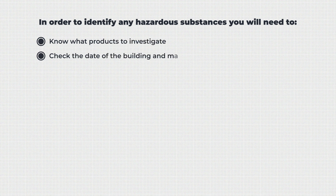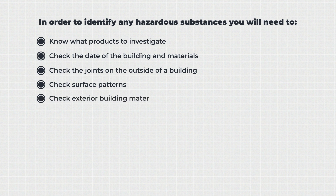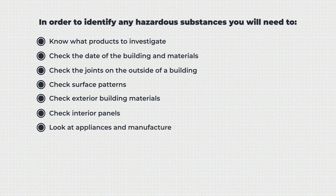Check the date of the building and materials to see if any predates 2000. Check the joints on the outside of a building — asbestos sheets often use aluminium runners and small nails. Check surface patterns, as asbestos can cause dimples and craters to appear on surface materials. Check exterior building materials, especially older concrete cement boards.